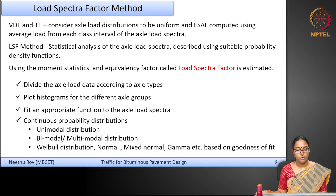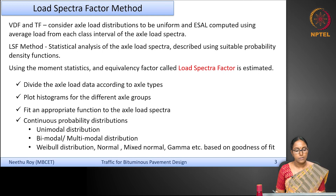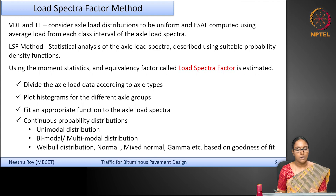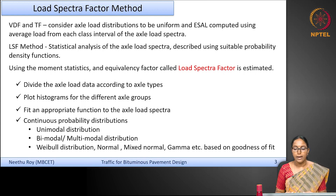In the VDF or the truck factor method, we actually consider the axle load distributions to be uniform within a certain range, and the ESAL is computed using the average load from each class interval of that particular load spectra — so the distribution is essentially considered uniform within that load group. Whereas, in this load spectra factor method, we use the axle load histogram and perform statistical analysis on the axle load spectra, explaining it in terms of probability density functions.